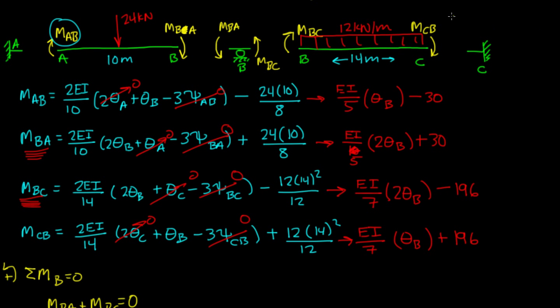So, theta b, let me write theta b up here. Actually, no, I don't want to do that because I may need that space. Theta b, I'll write it down here. Theta b was equal to 2905 over 12EI, right?